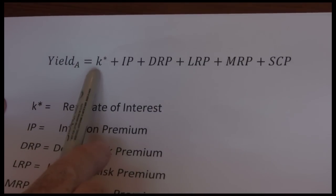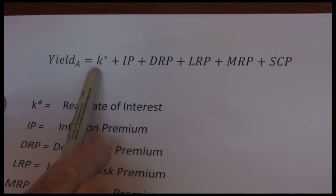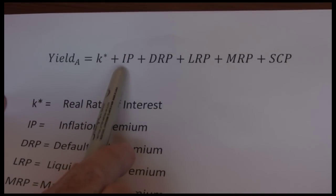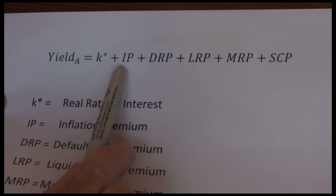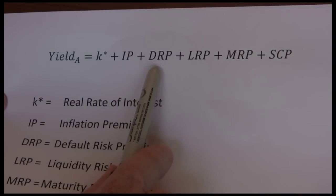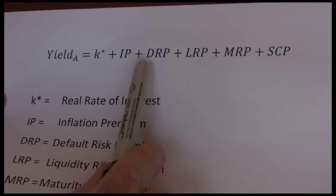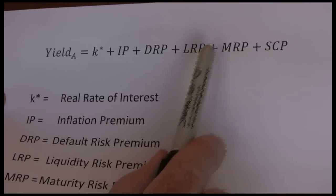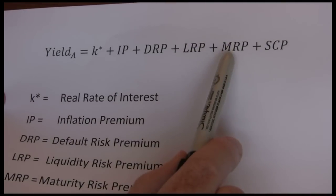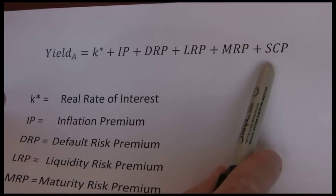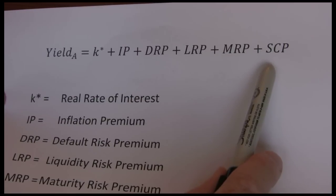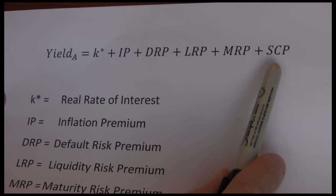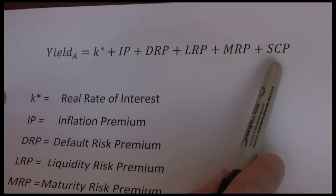One is the real interest rate, or real rate of interest. Then we have the inflation premium, default risk premium, liquidity risk premium, maturity risk premium, and special characteristics premium. I want to break these down and spend a little bit of time talking about each one of these.